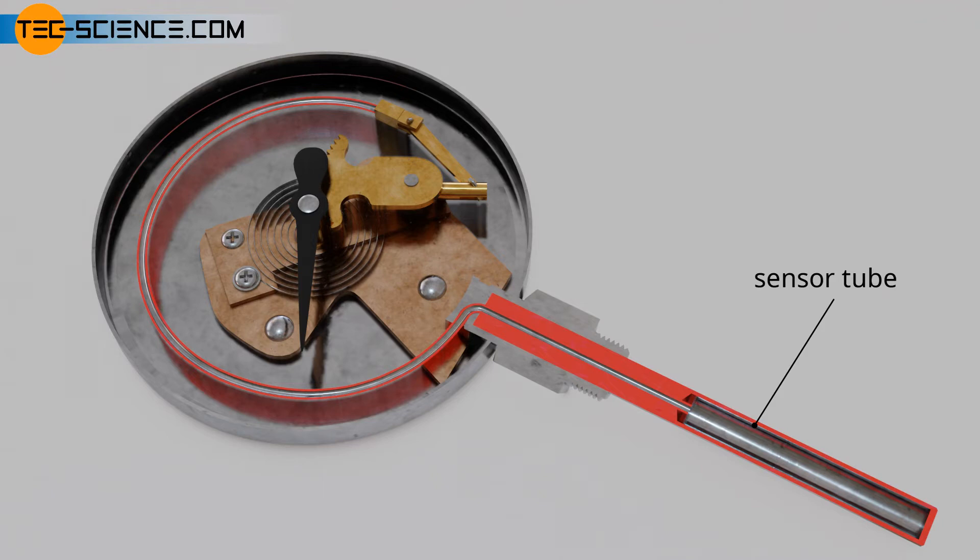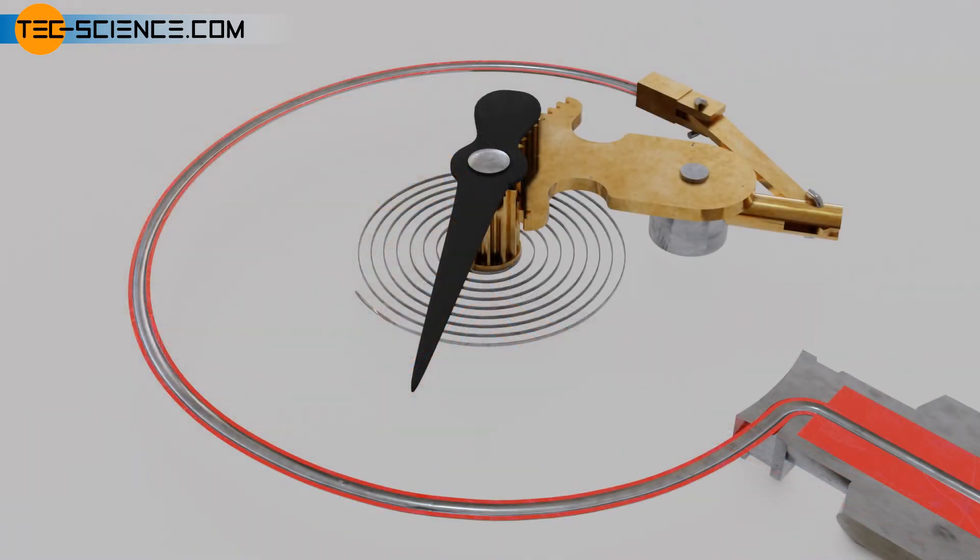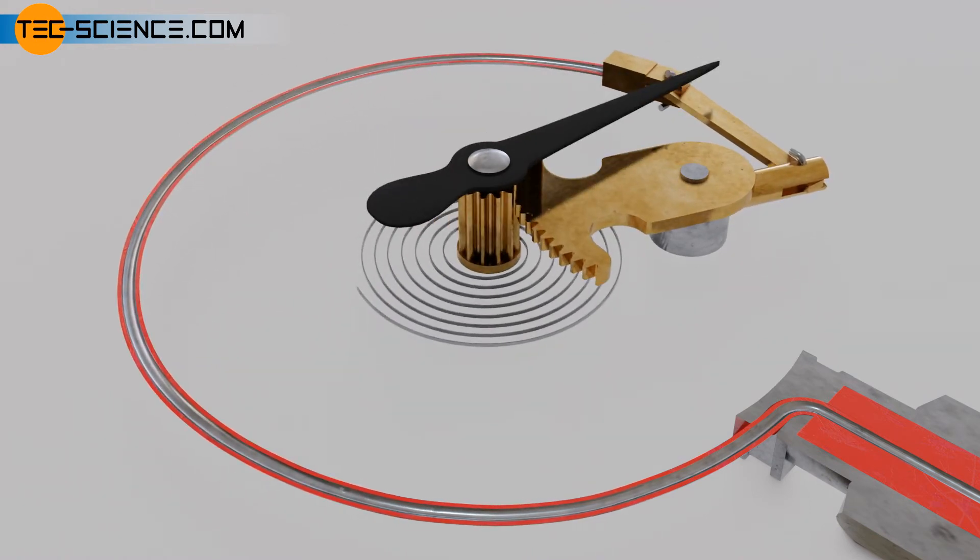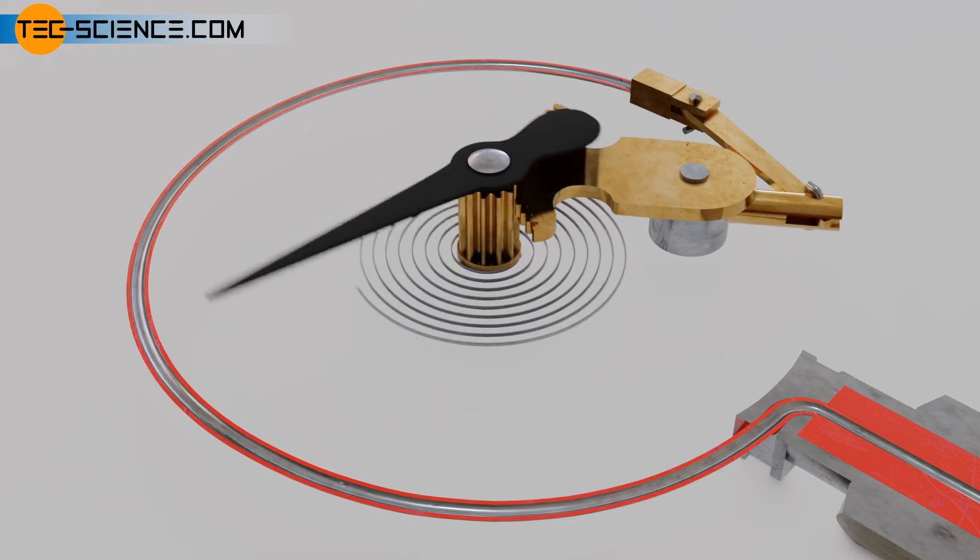If the bulb and the gas inside it are heated, the pressure increases because the gas cannot expand. The relatively small thermal expansion of the tube can be neglected. The Borden tube bends like a spring due to increasing pressure. This elastic deformation due to the increase in pressure serves as a measure of the temperature and can be read off a calibrated scale.